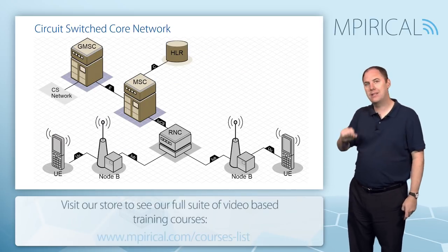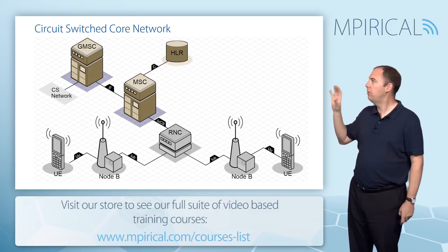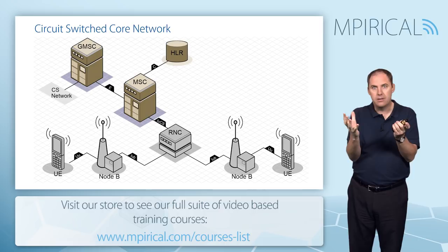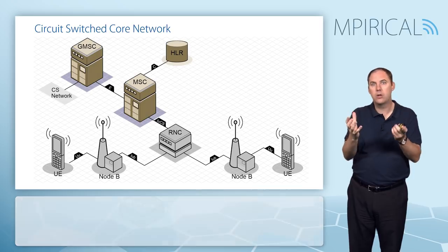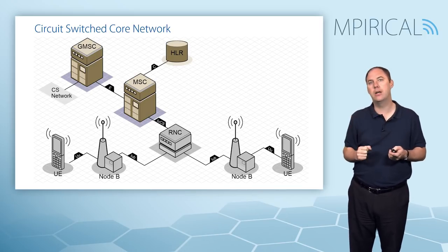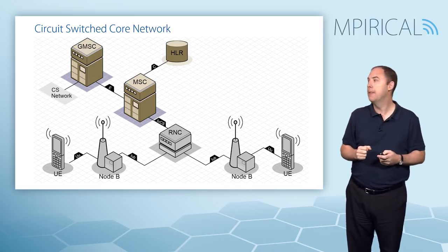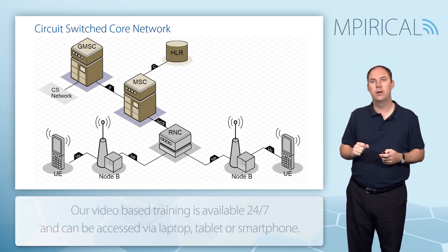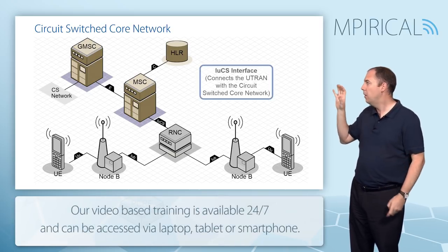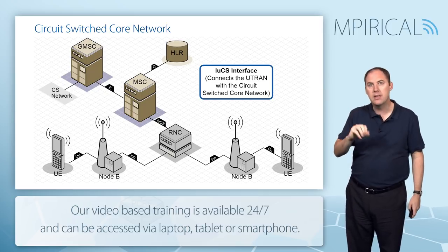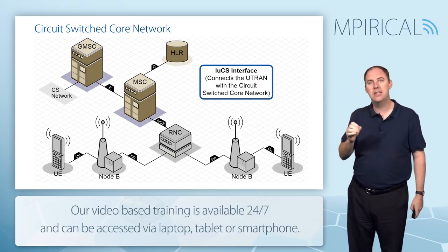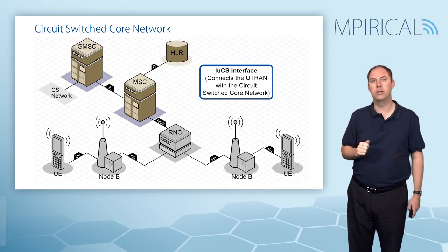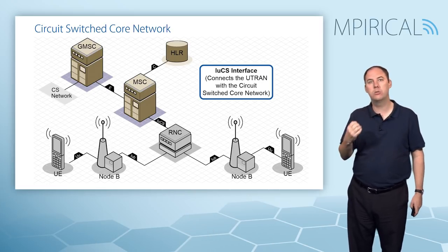We've looked at the radio access network and the phone; now let's look at the core network. In UMTS there are two splits in the core network: the circuit switch side and the packet switch side. Looking at the circuit switch core network, we connect from the radio access network using the IU-CS — the interface for UMTS CS circuit switched — going up to the MSC, or Mobile Switching Center.